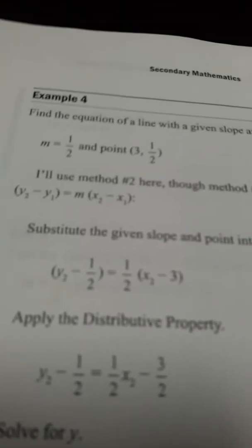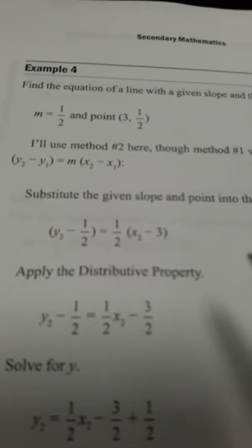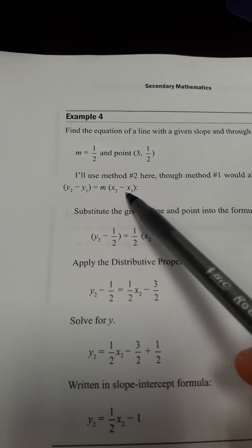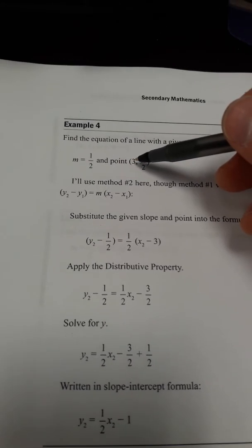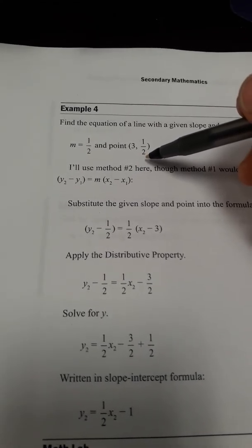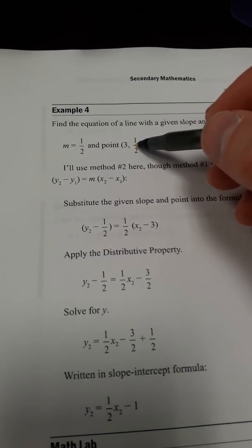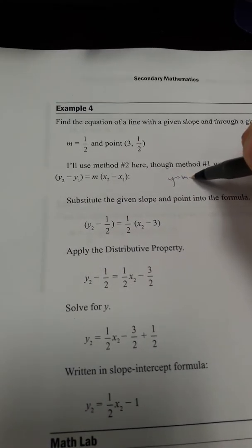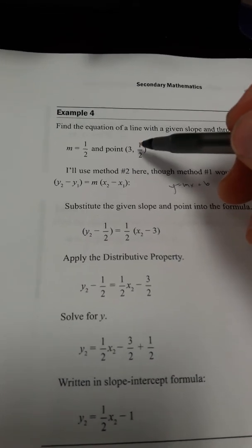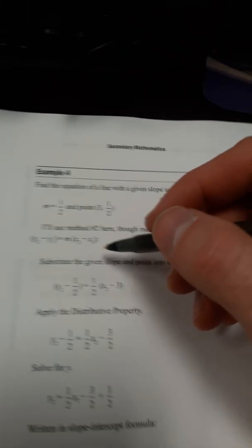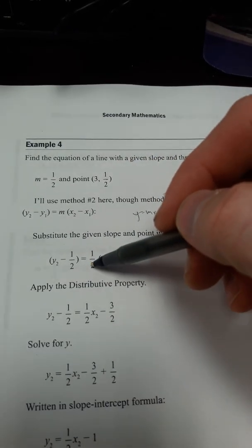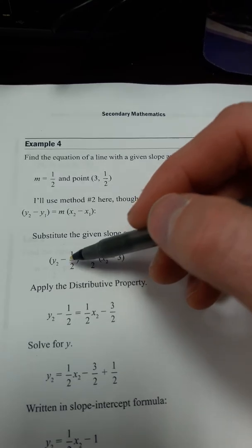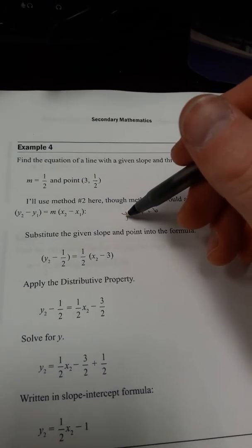Now they're going to show Method 2 for finding the equation for a line. Remember Method 2 uses the formula: y2 minus y1 equals the slope times (x2 minus x1). They give a slope of 1 half and one point on the line: (3, 1 half). So we use this as y1 and x1, plug and solve to make the equation look like y equals mx plus b. Plug in 1 half for the slope, 3 for x1, and 1 half for y1, and keep y2 and x2.